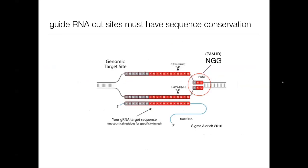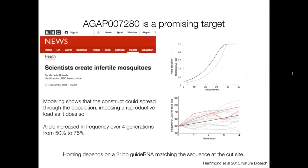Both of these approaches have already been demonstrated in principle in the lab, and there's work that continues to build these into robust tools for vector control. Both approaches use CRISPR-Cas9, which depends on a homing guide RNA target sequence. For Cas9, the sequence has to end in NGG. For the guide RNA to effectively target the cut, these 21 bases have to be very highly conserved, and we know that mosquitoes have a lot of genetic variation.